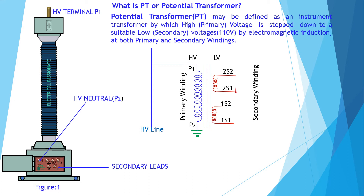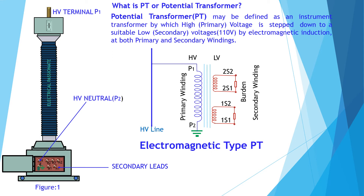This is the burden. Voltmeter and wattmeter are the measuring instruments, and relays connected across the secondary are called its burden. Potential transformers do not differ much from power transformers, except the load or burden is very small — a few volt-amperes.